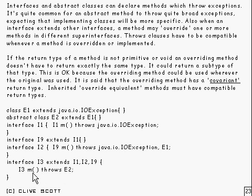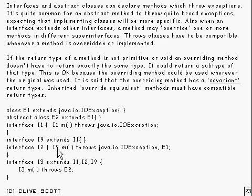At this point the compiler will trigger a check to make sure, first of all, that the return types are compatible. So it checks that i3 is a subtype of i9 — which it is, since it extends it — and it checks that i3 is also a subtype of i1 — and again it is, because it extends it. So that's OK.